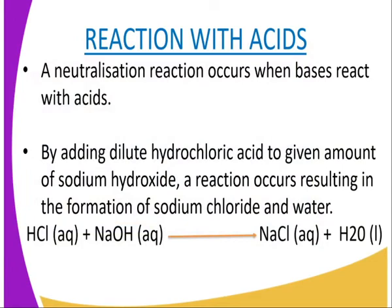This is a summary to help us understand how we write this chemical reaction. A neutralization occurs when a base reacts with an acid. For instance, by adding dilute hydrochloric acid to a given amount of sodium hydroxide, a reaction occurs resulting in the formation of sodium chloride and water. Those two substances are neutral, hence a neutralization reaction.